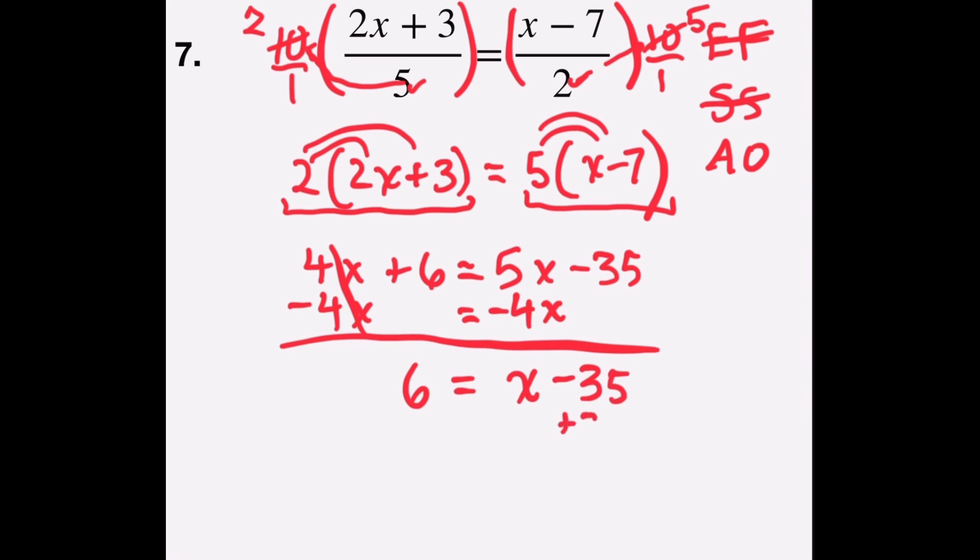I have to add the opposite of 35 then to both sides in order to isolate my numbers on the left side and my variable terms on the right side. So 6 plus 35 is 41 on the left side. Negative 35 plus 35 is 0. 0 plus x is x. So that step is done.